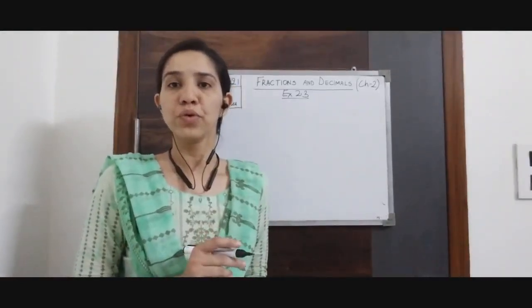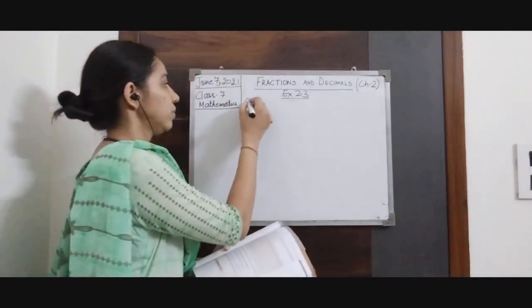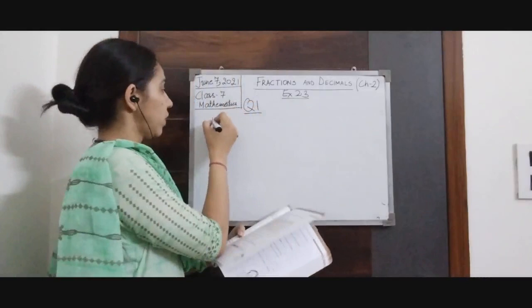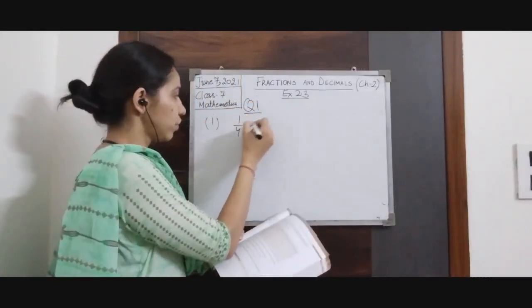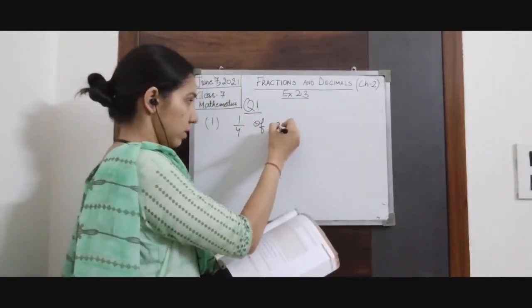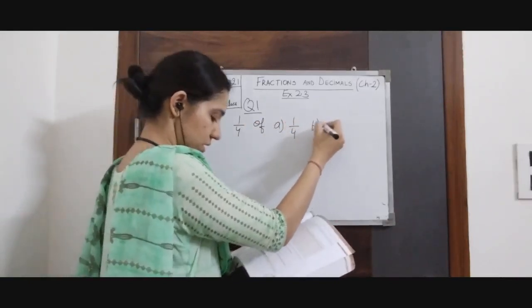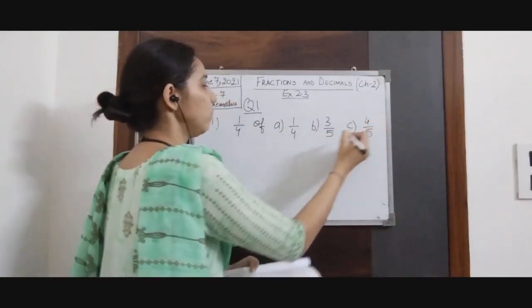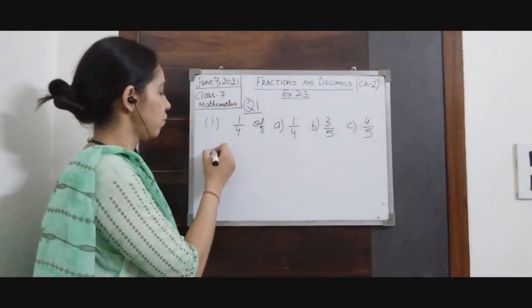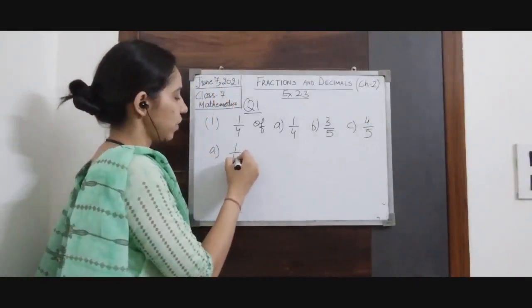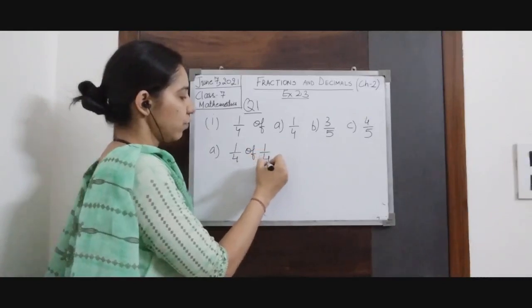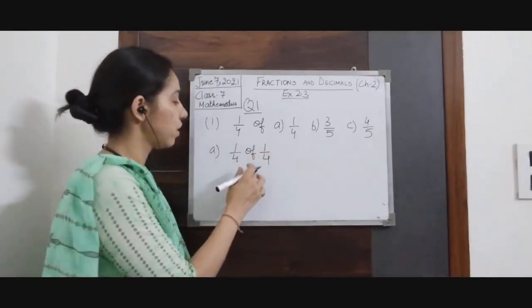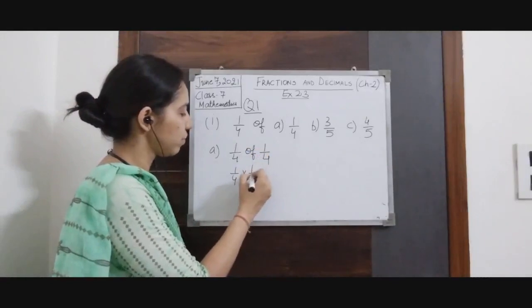Now we will do a few questions from exercise so that we can understand this concept completely. Question number 1, part 1: you have to find out 1/4 of (A) 1/4, (B) 3/5, (C) 4/5. We will first solve part A, which is 1/4 of 1/4. Here 'of' means 1/4 into 1/4.